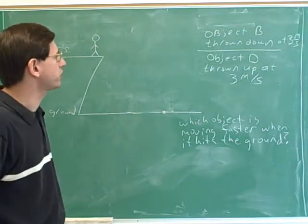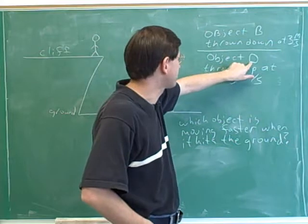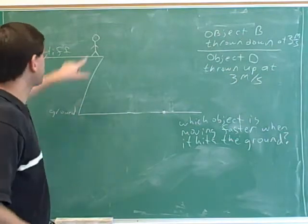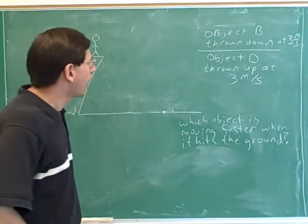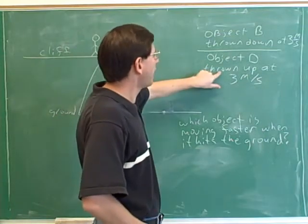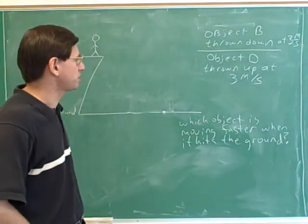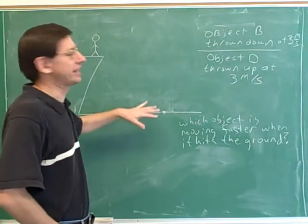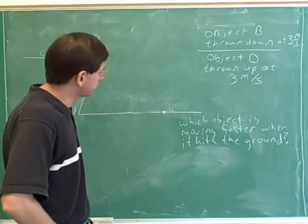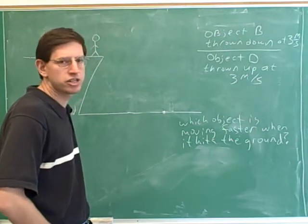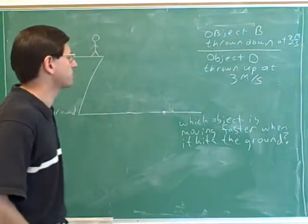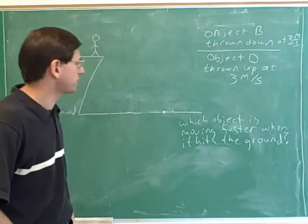Here's another conceptual question. Now we're comparing object B and object D. Both of these are being thrown from the cliff and ending up hitting the ground. Object B is being thrown down from the cliff at 3 meters per second. But object D is being thrown up at 3 meters per second. We know that eventually object D is still going to hit the ground — whatever goes up must come down. So object D is going to be thrown up at 3 meters per second, move up, and then eventually fall back down to hit the ground. Both will eventually hit the ground.